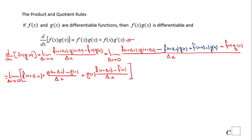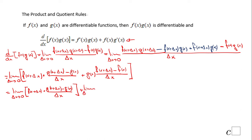Now I'm going to use the property of limits and break this limit into two parts. The first limit is: limit as delta x approaches zero of f(x + delta x) times [g(x + delta x) minus g(x)] over delta x. The second part is: limit as delta x approaches zero of g(x) times [f(x + delta x) minus f(x)] over delta x.